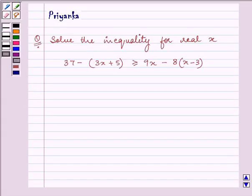Hi and how are you all today? The question states, solve the inequalities for real x. The inequality given to us is 37 minus bracket 3x plus 5 bracket close is greater than equal to 9x